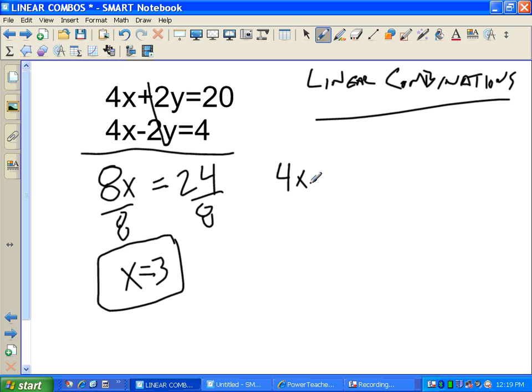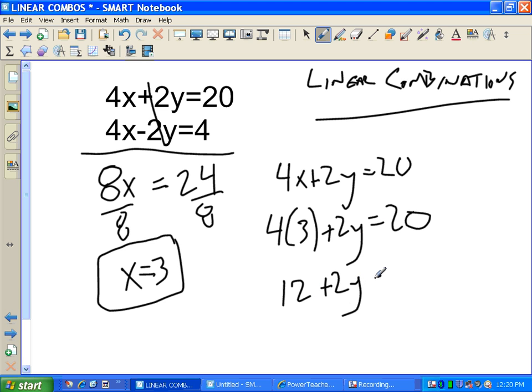And I just rewrite this. Instead of 4x plus 2y equals 20, I'm going to substitute the 3 in. 4 times 3 plus 2y equals 20. 4 times 3 is 12. 12 plus 2y is 20. We're solving this. We're going to subtract 12. Subtract 12 gives me 2y equals 8. y equals 4.